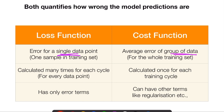Cost function is the average error for the group of data, whereas loss function is for just one single point. If your training dataset has, say, a thousand samples, every single point will have a loss value.